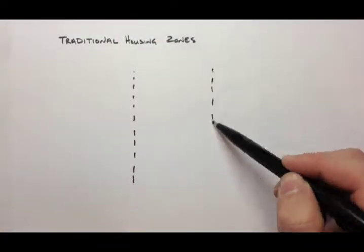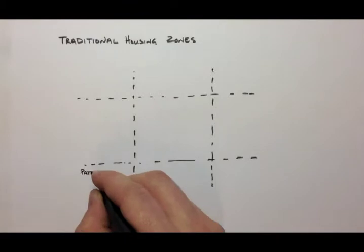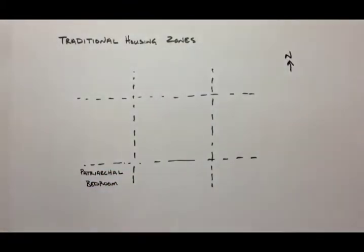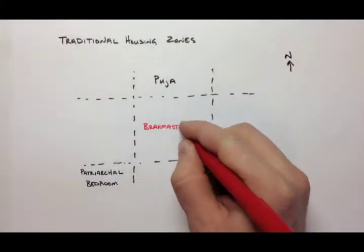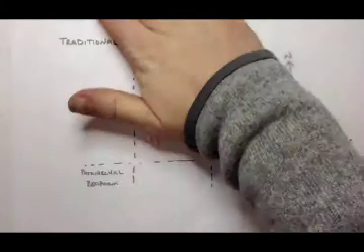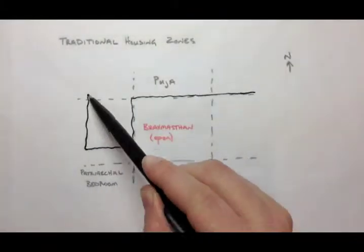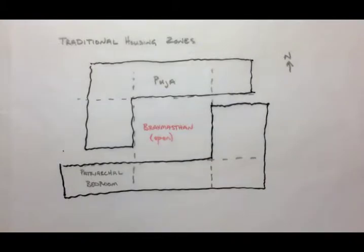After the application of passive strategies, the traditional organization for Indian housing was overlaid. These traditions include a patriarchal bedroom in the southwest, puja in the north section of the house, and for the center of the house to remain open, the Brahmistan.